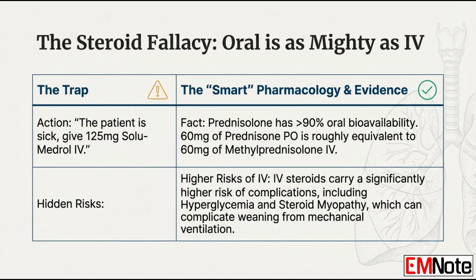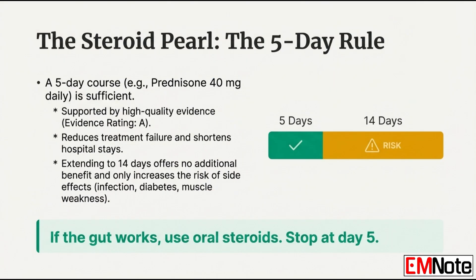On duration: we used to see patients on steroids for 10 or 14 days. The recommendation now is the five-day rule. A short, high-dose course — prednisone 40 mg daily for 5 days — is completely sufficient. Going longer adds zero additional pulmonary benefit. Studies are clear: extending to 14 days doesn't improve lung function or length of stay, but it does multiply the risk of side effects like severe infection and new-onset diabetes. Stop at day five.